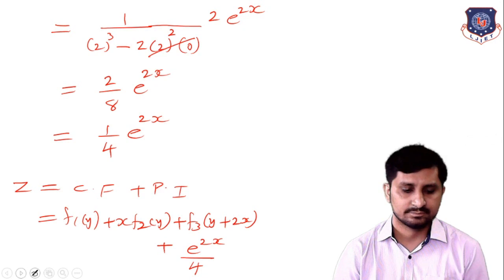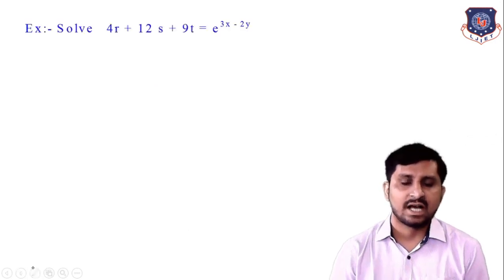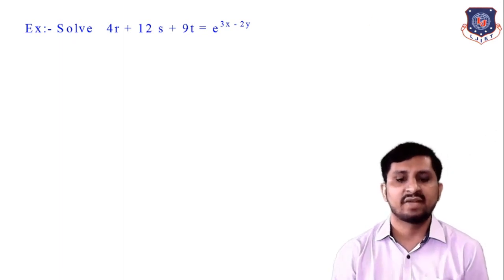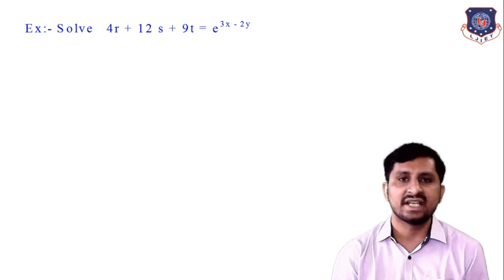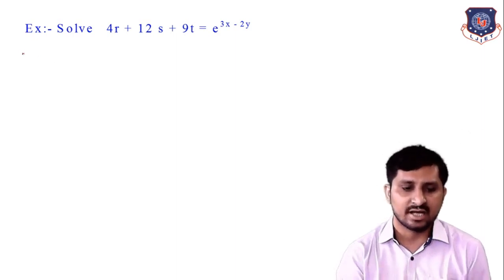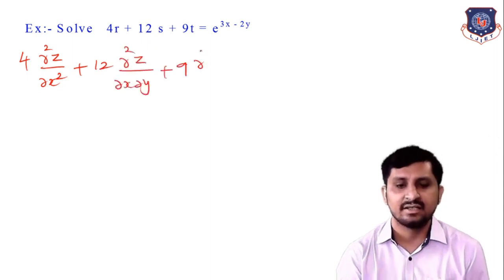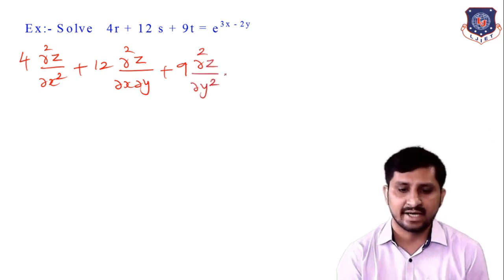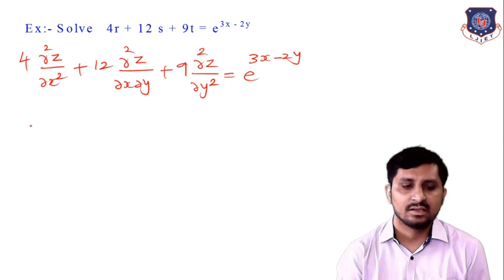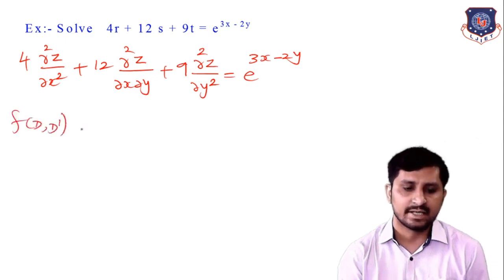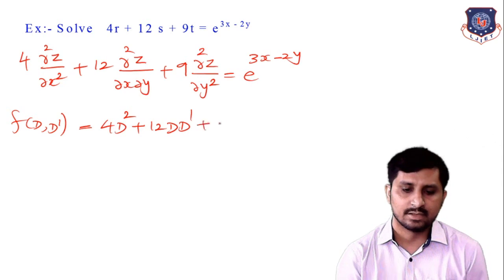Next example: 4r + 12s + 9t = e^(3x - 2y), using standard notation where r = ∂²z/∂x², s = ∂²z/∂x∂y, and t = ∂²z/∂y². So f(D, D') = 4D² + 12DD' + 9D'² = 0. Converting to m form: 4m² + 12m + 9 = 0, where m = D/D'.